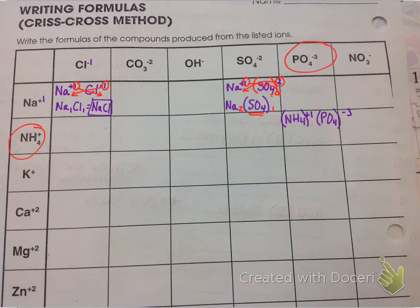Next step is to do our criss-cross. So the 1 from NH4 goes on the outside of the phosphate, and the 3 is going to go on the outside of the parentheses for our NH4. So our final formula is going to look like this. We have parentheses, NH4, with a 3 subscript, and then parentheses, PO4.